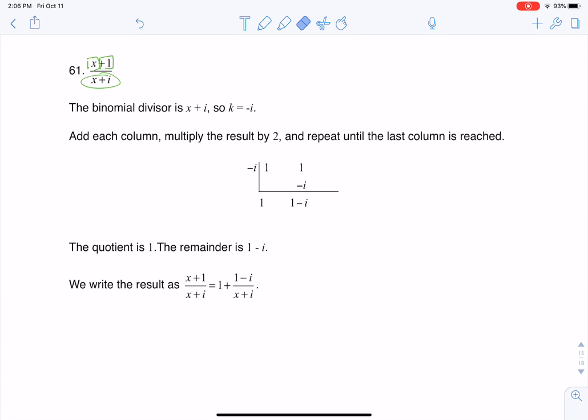So let me just erase my little scratch marks there. Here we go. We're going to bring the one down, right? One times negative i is negative i, and when I add these, I get one minus i. So that's it. This is my remainder.